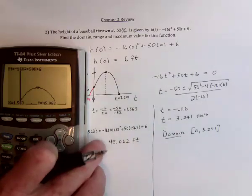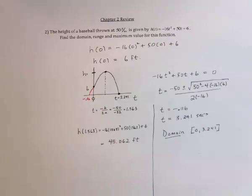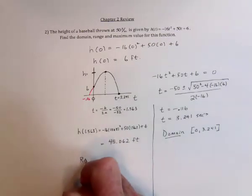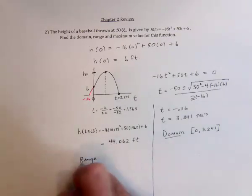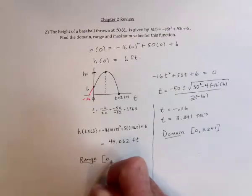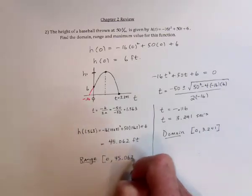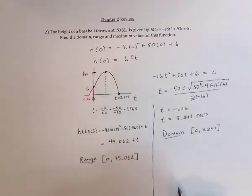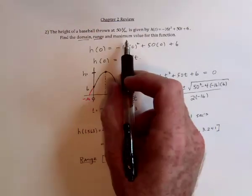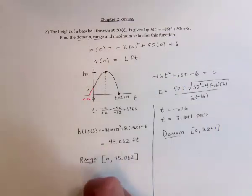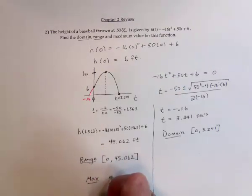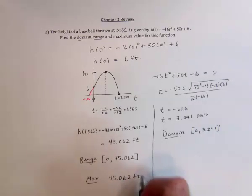45.062 feet. And now we have the range. So the range is that at the very lowest, the baseball is on the ground. That's a height of 0. And at the very highest, it's at 45.062 feet. There's domain and range. And the other was the maximum value. But that's what we just found right here. So the max is 45.062 feet.